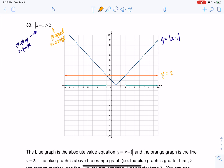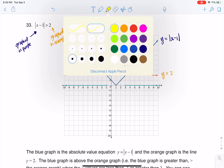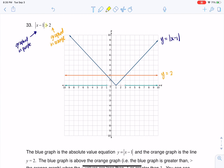So we've got our absolute value function that looks like a v and then we've got our horizontal line y equals 2. Now I'm being asked to find when is the absolute value greater than 2. And graphically that would mean where is this v higher than this horizontal line.